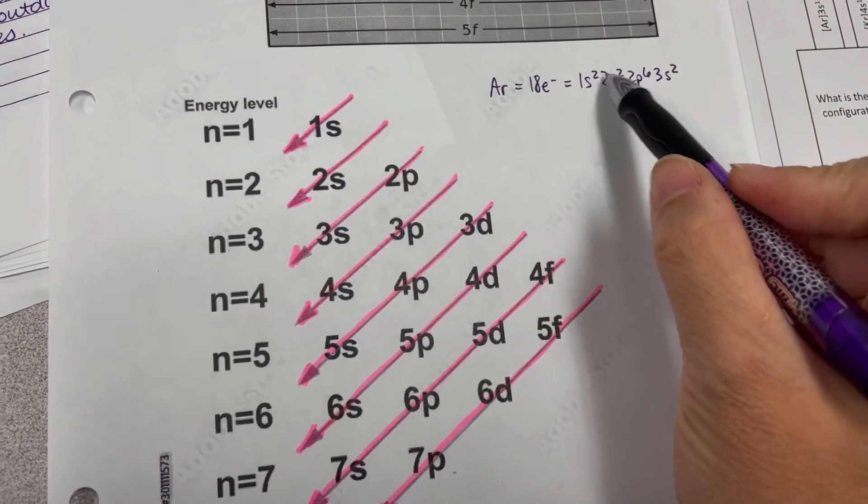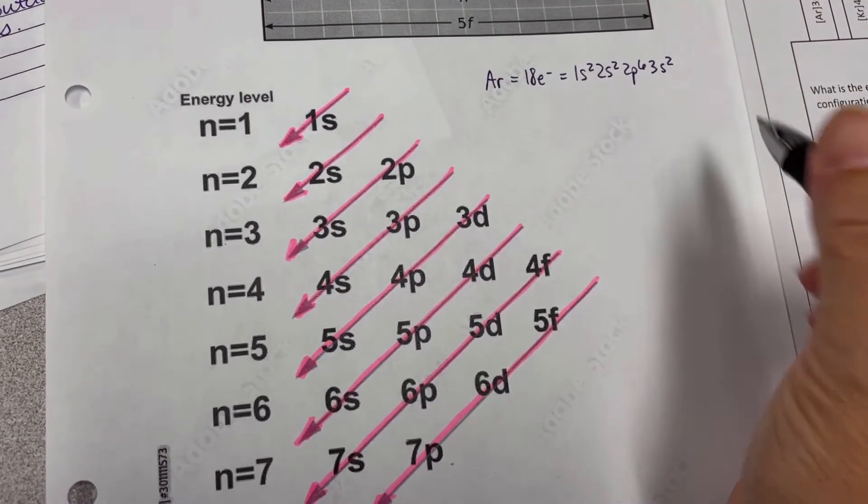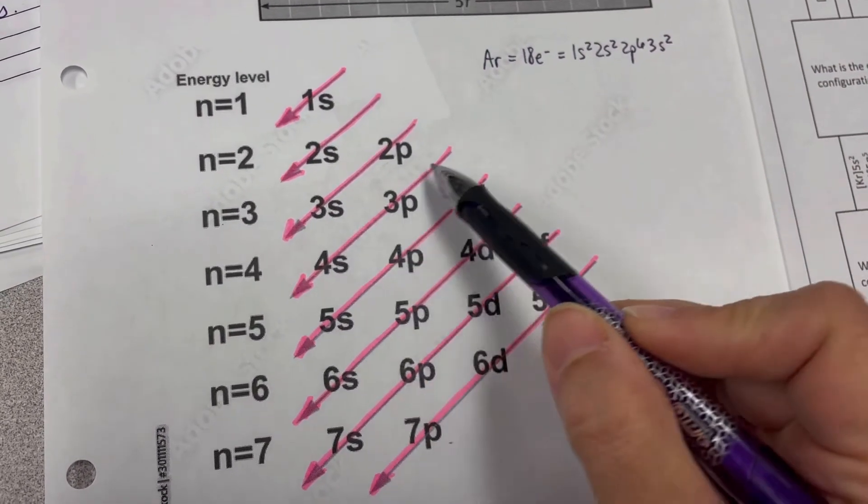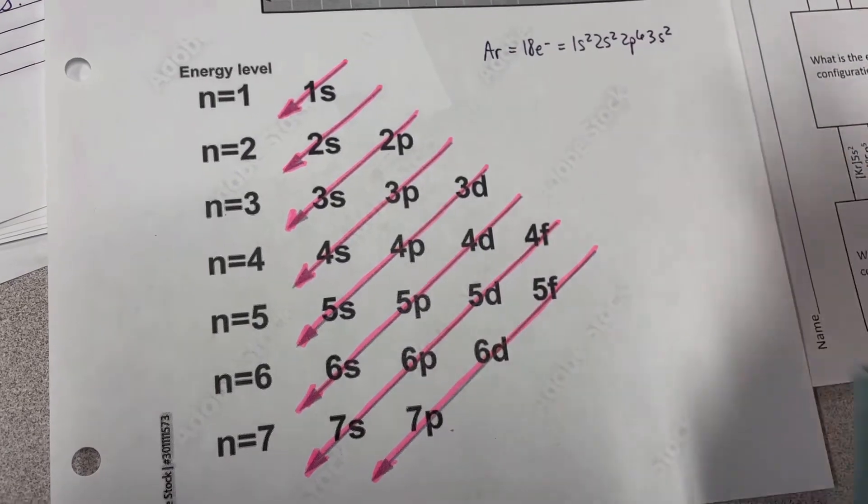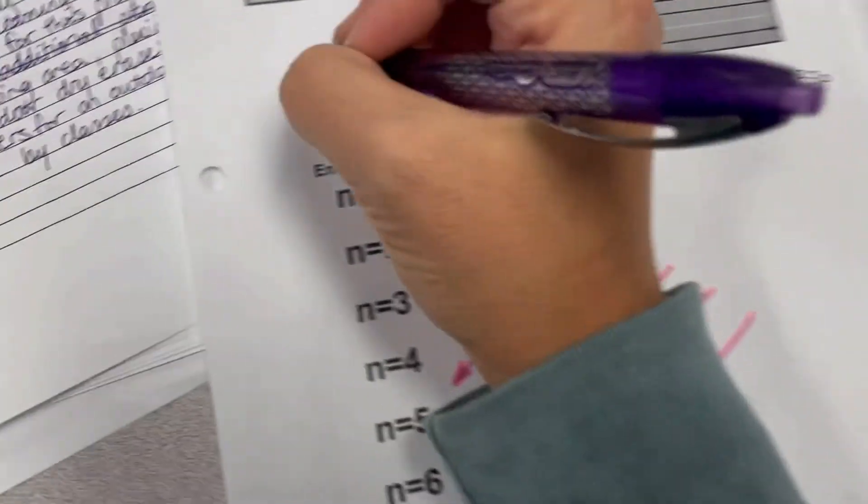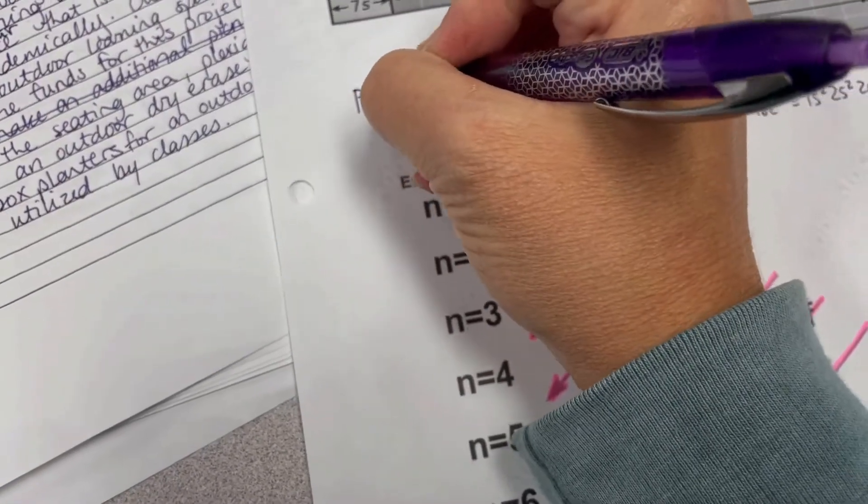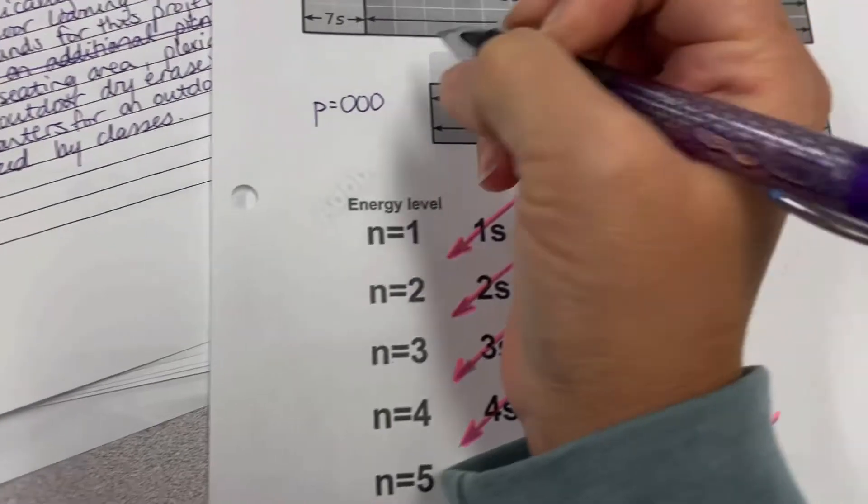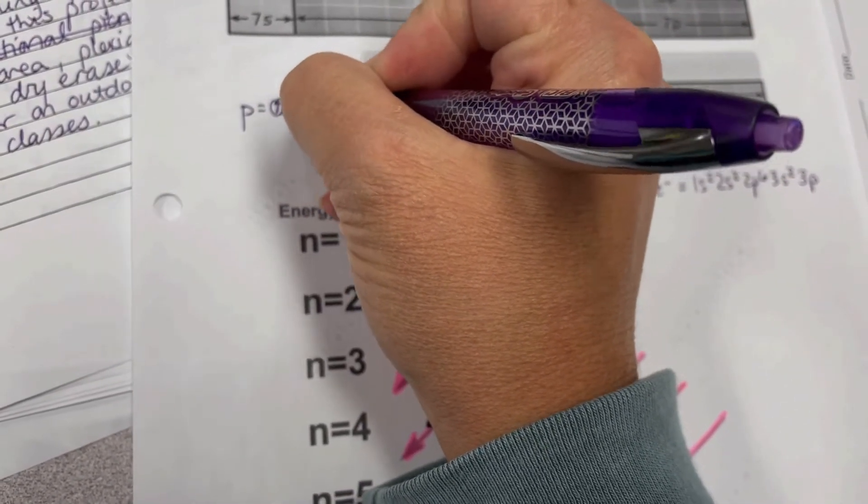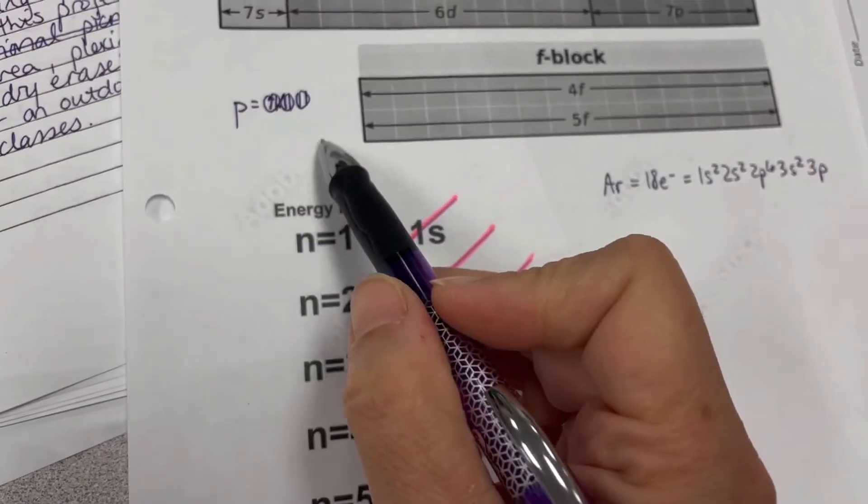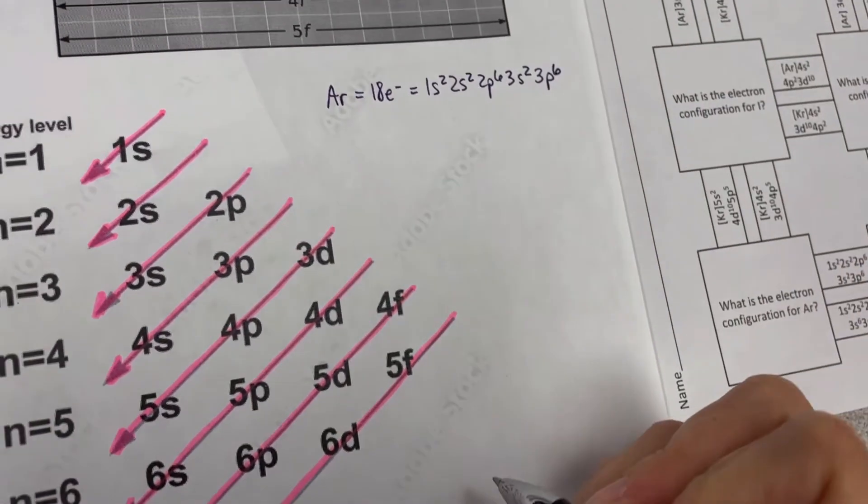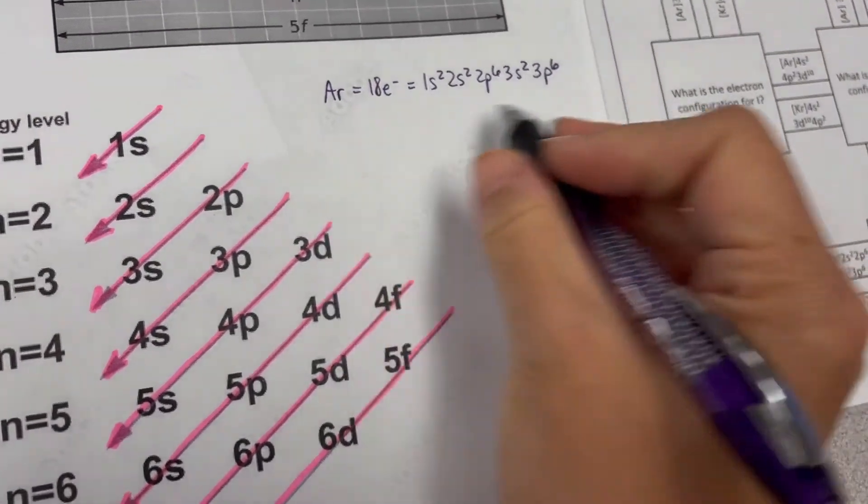And so if we add up the little tiny numbers, right now we're only totaling 12. I got to get six more. So after 3s, I have to come over to my next arrow and I see 3p. And I know that technically, p's have these three orbitals and each one of those can hold two electrons for a total of six. So we're going to finish this one out with 3p6. So this is argon's configuration.